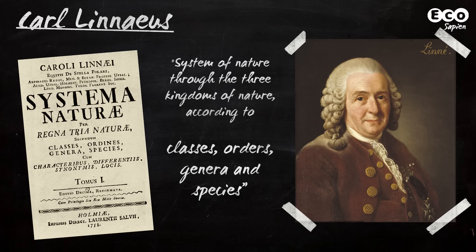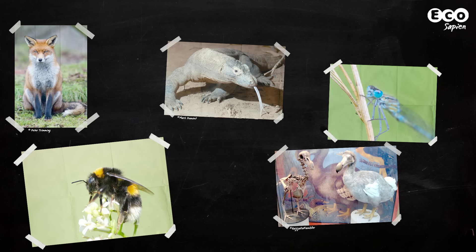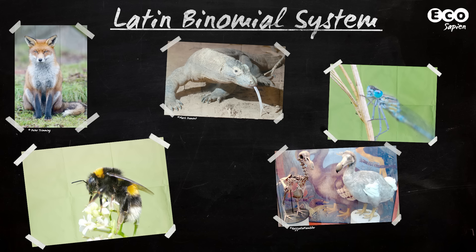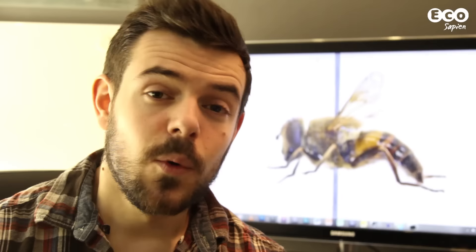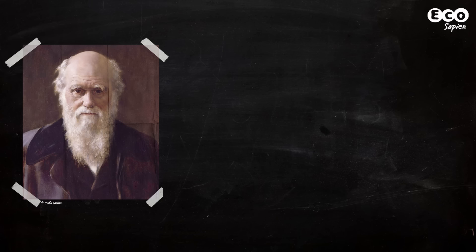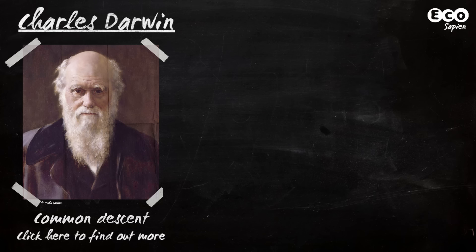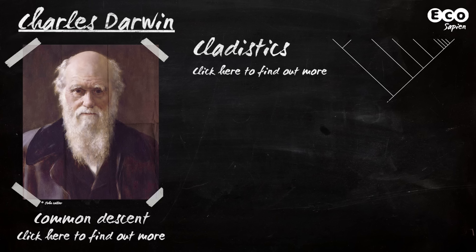The man who came up with it all was Carl Linnaeus, who devised a system of categorising the natural world based on shared characteristics. Most importantly, he came up with something called the Latin Binomial System — a two-worded system used today to give a unique scientific name to every known species. We'll come back to that in a little bit.